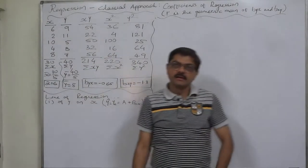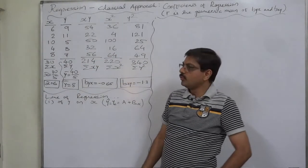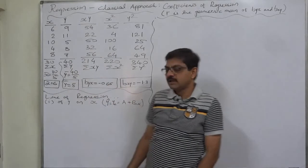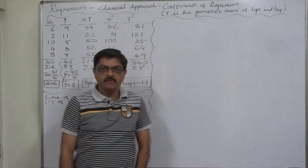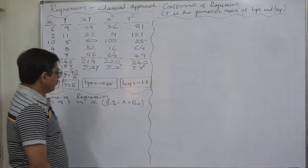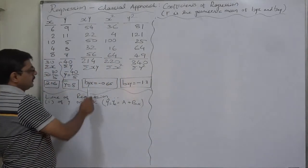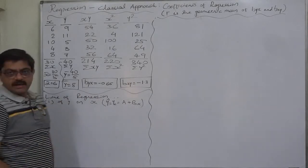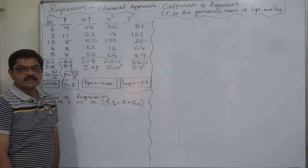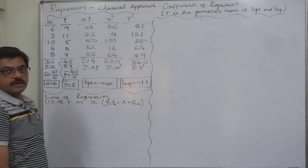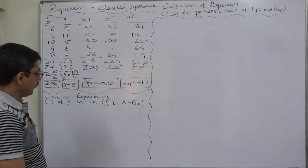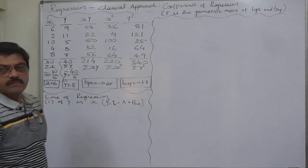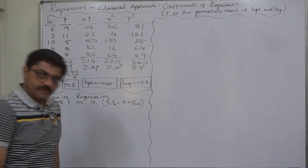Hello and welcome back. This is Part 2 of the solution of this case. In Part 1 we have already calculated the coefficients of regression as well as the two means. Now with the use of these four values we are going to find out the equations of the lines of regression.